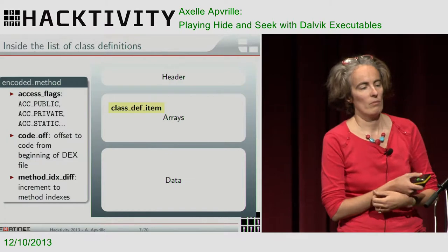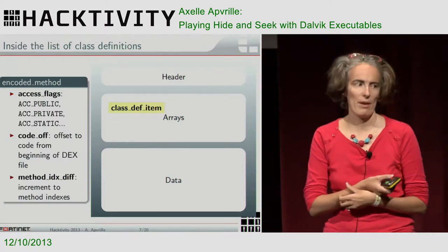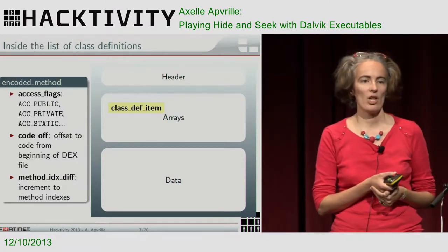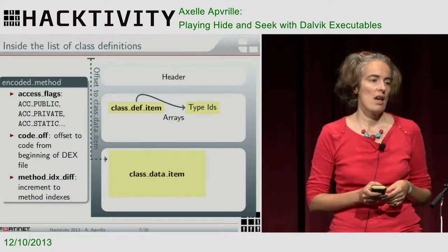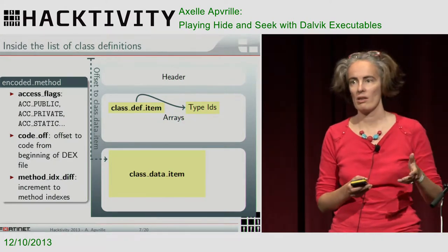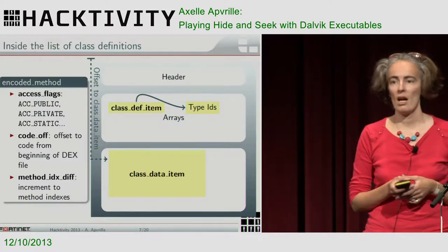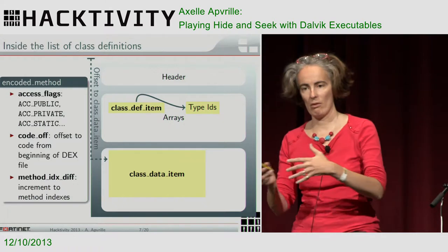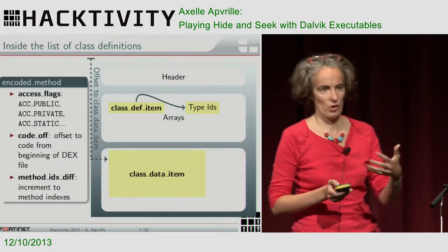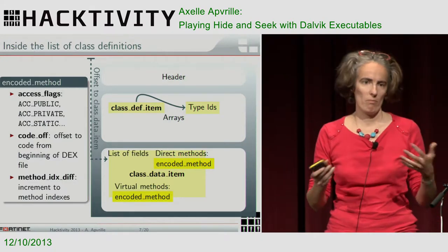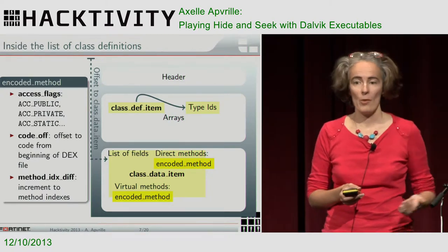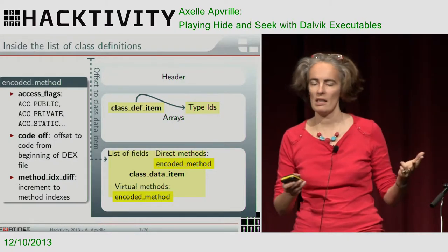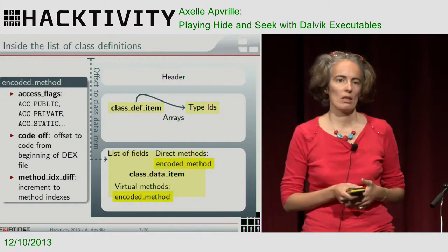That's where we're going to actually modify things in the dex file to hide the method. In one particular list, in the arrays, we've got a list - each item for the class definitions is called class_def_item. And that references different type identifiers, and also an offset to an interesting structure, which is called class_data_item in the data section. I don't expect you to remember all the names, but it's good to have them in case you want to look at the Dalvik reference sheet. In the class_data_item, it describes the class - how many fields you've got, how many direct methods, those are methods which are public and static, and how many virtual methods.